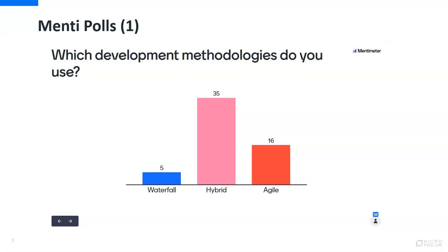Many customers are still in the transformation, moving from waterfall to agile, but this is not something which happens from one day to the other. It will require time, training, and a mindset shift, as the waterfall approach was very different from the agile and DevOps approach. In order to get there, you need some kind of hybrid approach in between and change your thinking during execution.